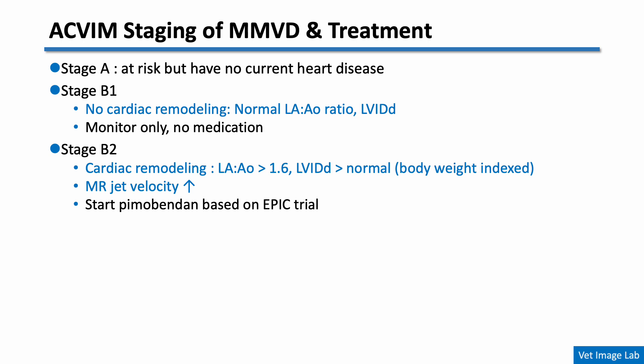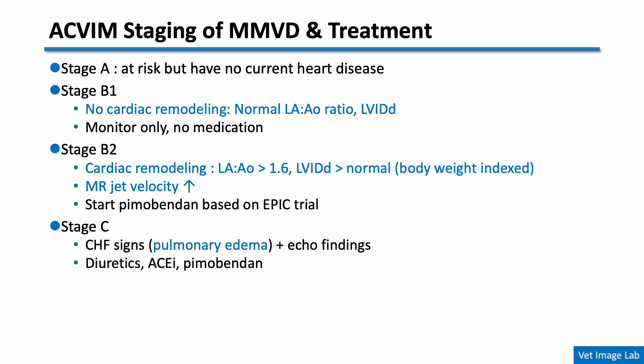In Stage B2, the disease has progressed and the heart is starting to remodel in response to volume overload, with enlargement of the left atrium and left ventricle. In these dogs, treatment is typically started to delay the development of heart failure. Stage C is when the dog shows clinical signs of congestive heart failure, usually caused by pulmonary edema from elevated left atrial pressure. Stage D includes dogs with advanced heart failure that no longer responds well to standard treatment. This staging system directly reflects structural changes in the heart, making echocardiography essential for guiding treatment.